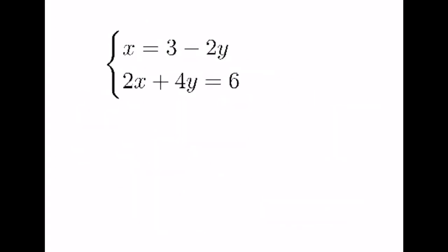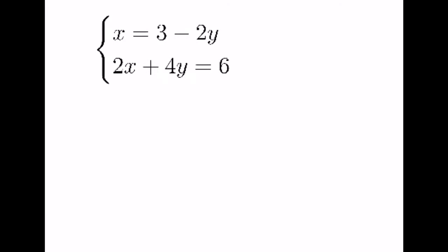Moving down, we're going to solve this system by substitution. The first step is to solve one of the equations so that we have a variable all by itself, such as this top one, where it says x equals something. X is all by itself. So what we're going to do is take this entire quantity, 3 minus 2y, and plug it in for x in the other equation, which looks like this.